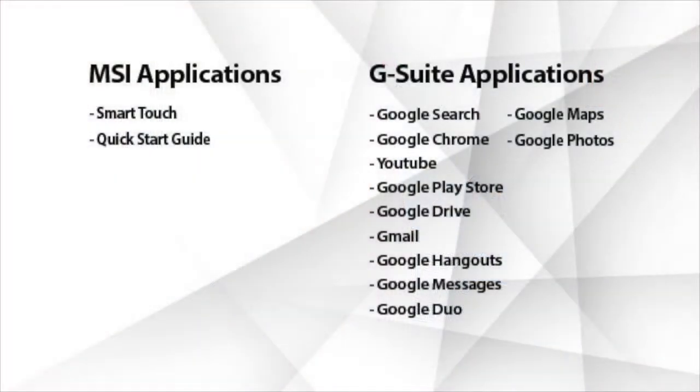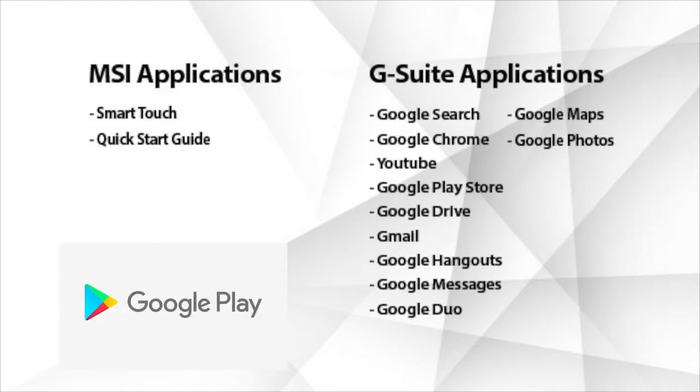The main method of programming is over the air through Radio Central. Here is a list of applications that come already installed on the ION device as default. Other apps can be downloaded from the Google Play store.